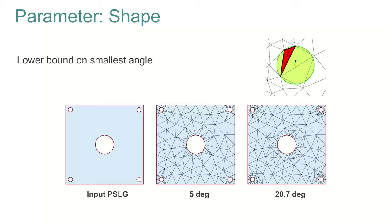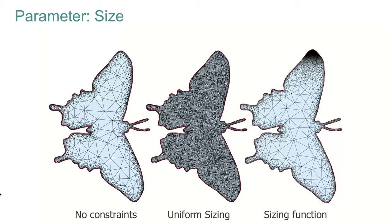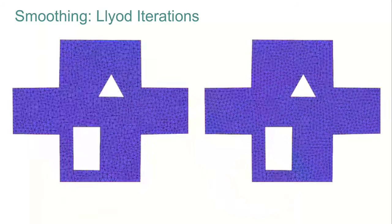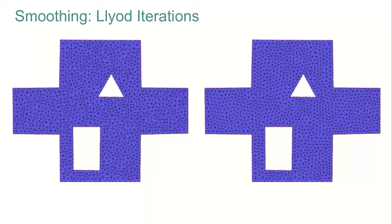This procedure is guaranteed to terminate if the threshold is at most 20.7 degrees. Extending this algorithm, we can control the size of the elements. In the first example, only the minimal angle is used as a target. In the second example, a maximum edge size is requested. In the third example, the size is assigned using a sizing field. The user can also provide seed points to indicate which regions are of interest, allowing the algorithm to skip optimization for triangles in regions without seed points.